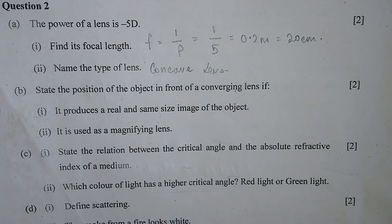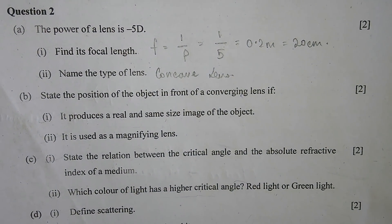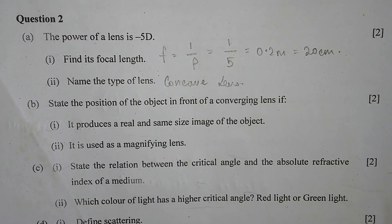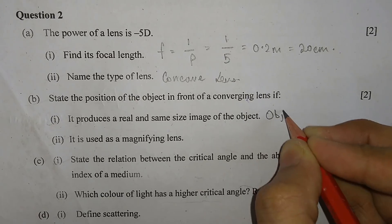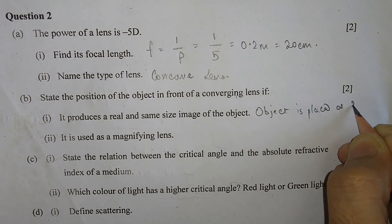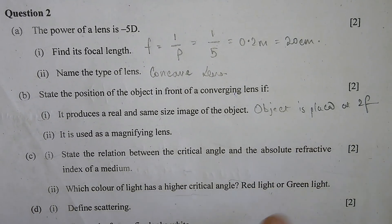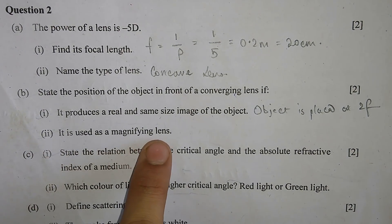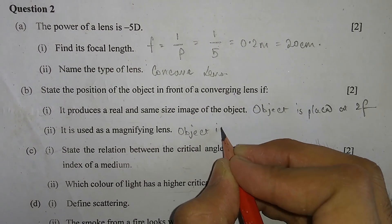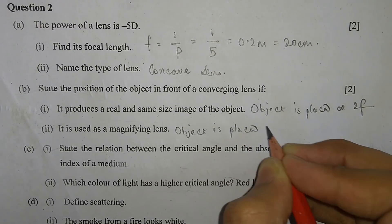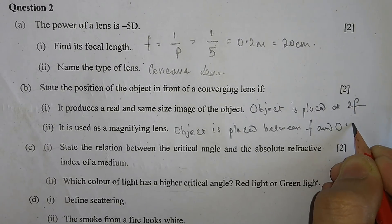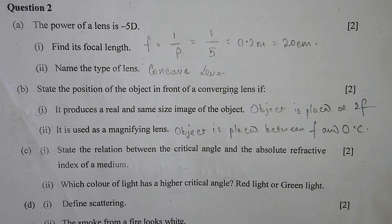Part B: State the position of the object in front of a converging lens. Number 1, if it produces a real and same-size image: the object is placed at 2f (2 times the focal length). Number 2, if it is used as a magnifying lens: the object is placed between the focus and the optical centre.